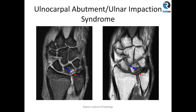You can see cystic changes within the lunate with some marrow edema. There is positive ulnar variance, appreciated on the T1-weighted sequences, and marrow signal change in the lunate. There is a mildly positive ulnar variance. This is a case of ulnar abutment syndrome with secondary osteoarthritis.